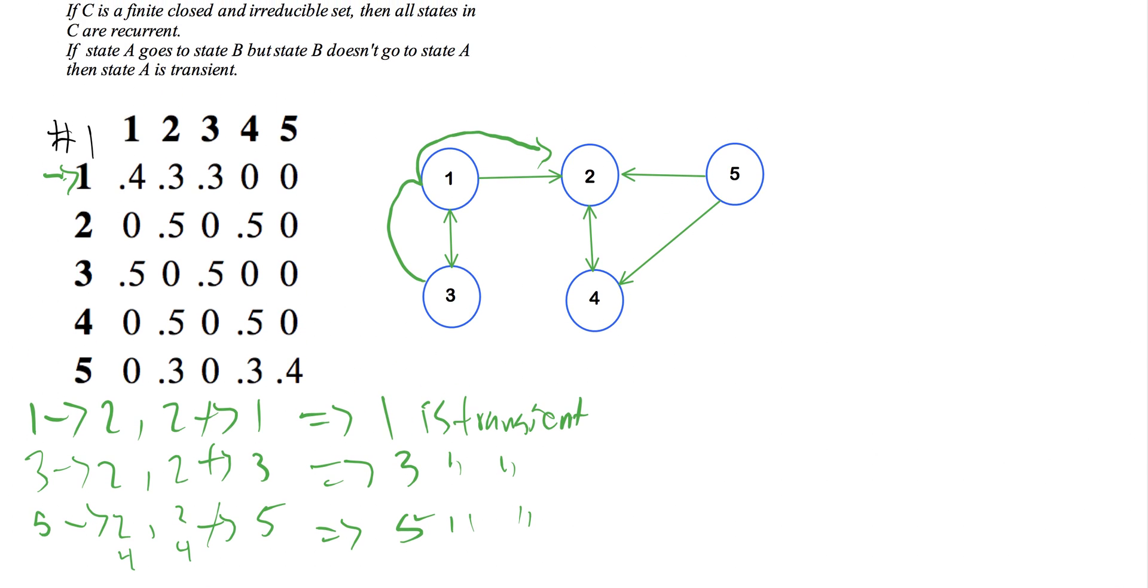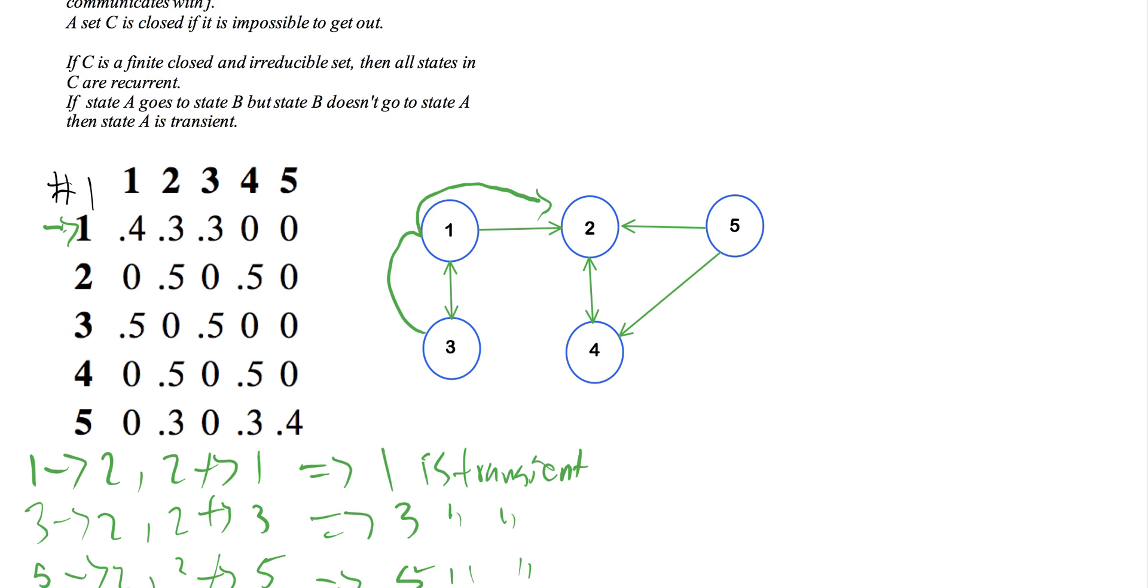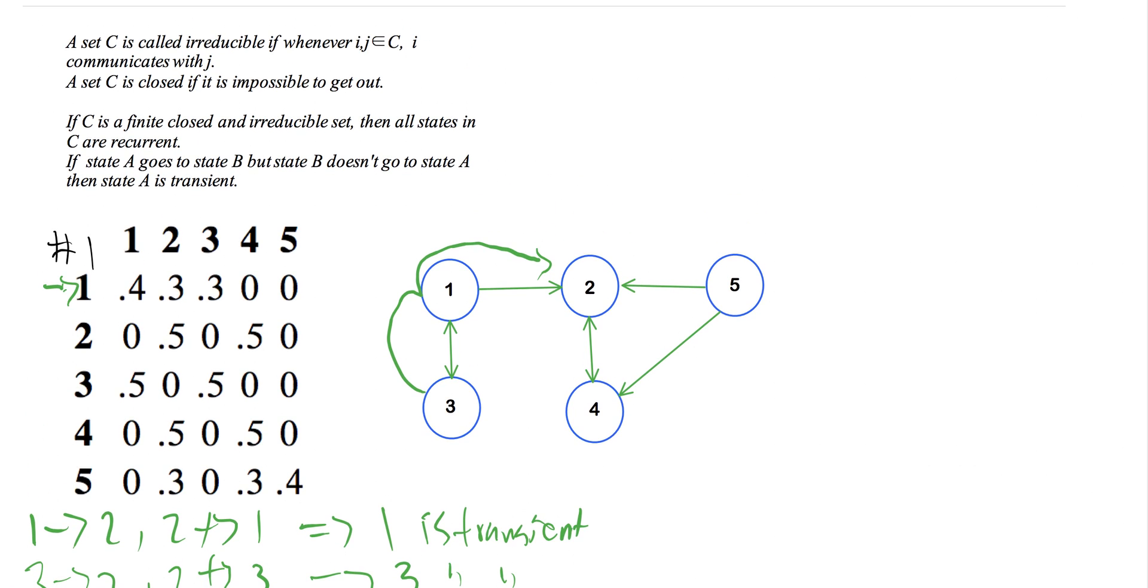Now let's really quick look at the last two here. We've got two and four. So we said that a set C is called irreducible if whenever I and J are elements of C, then I communicates with J. Well,